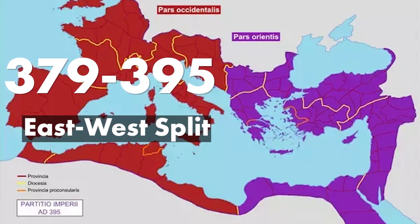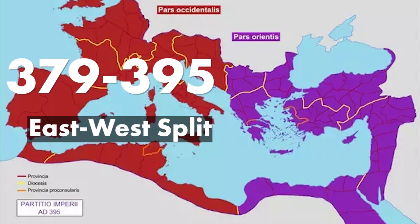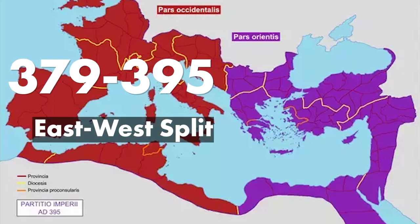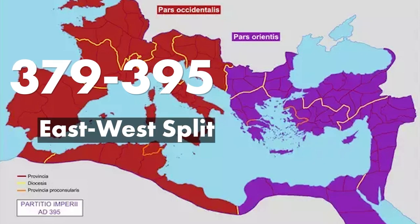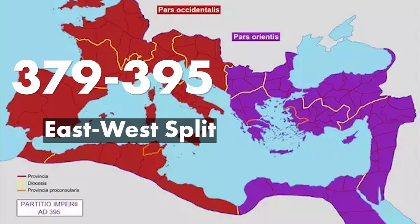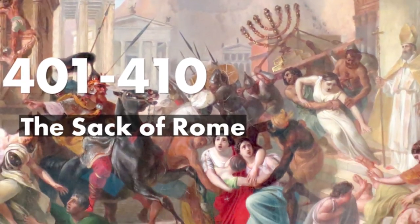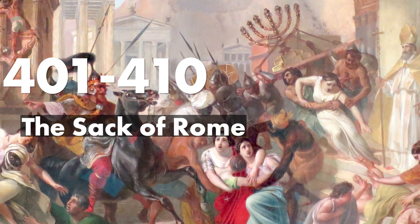Moving on, in 379 to 395 we have the east-west split. After Valens's death, Theodosius ruled from 379 to 395 and briefly reunited the empire, but it didn't last beyond his reign. At his death, the empire was divided between his sons — Arcadius in the east and Honorius in the west.